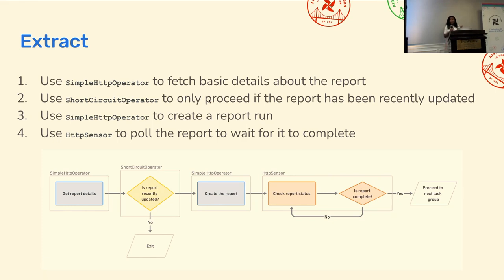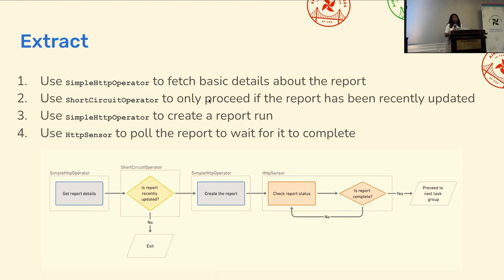Here's how that overall extraction process looks. First, we tell Stripe: here's a report we want — when was it last updated? Stripe responds, and we use the DAG logical date to figure out whether we should sync this data now. If it has been updated recently, we create the report, then we wait for Stripe to finish it, and once it's finished we move to the next task group. There are more advanced or cleaner ways to do this — instead of polling the Stripe API, you might want to set up a webhook and other features embedded in Airflow. However, we just want to get something up and running because Kevin only gave us two days.